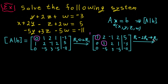Row 2 needs to have its leading entry as 1. For row 3, since we have -5 and we need zero, we add 5 times row 2 to row 3: row 3 plus 5 times row 2 goes to row 3.